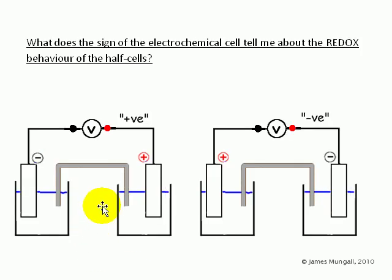In this first example here, a positive voltage has been recorded, which means that the left-hand electrode must be negative and the right must be positive. But in this second diagram, a negative voltage is recorded, which means that the left-hand electrode must be relatively positive and the right-hand relatively negative.